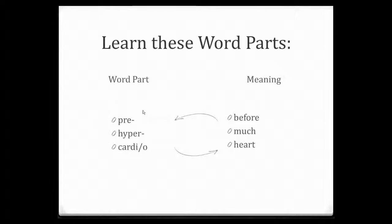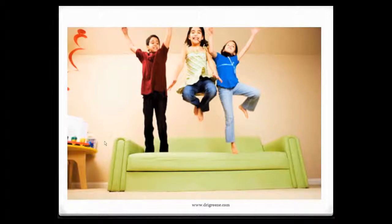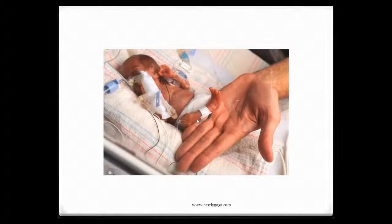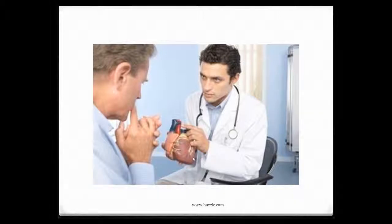Here are three common word parts used over and over in anatomy and physiology: 'pre' meaning before, 'hyper' meaning much, and 'cardio' meaning heart. You could practice by writing and memorizing, or you can use pictures to learn these new words. Here we see some kids jumping on the couch — we'd say they're acting hyper, or hyperactive. Hyper means much. Here we have a picture of a premature baby — 'pre' means before, 'mature' means age, so this baby was born before he was ready, making him a premature infant. And here we're looking at a cardiologist, because he is holding a heart. So every time you see heart, you should think 'cardi.'